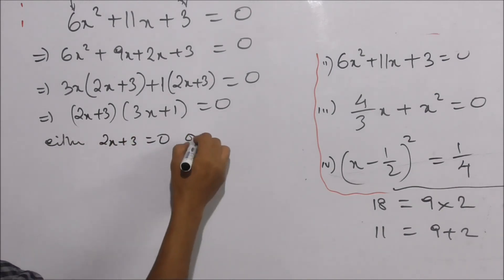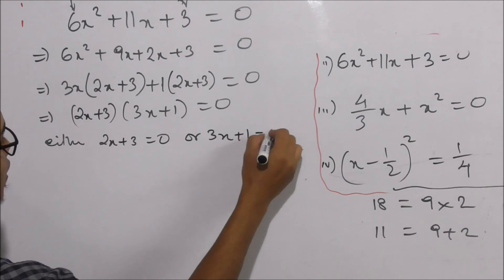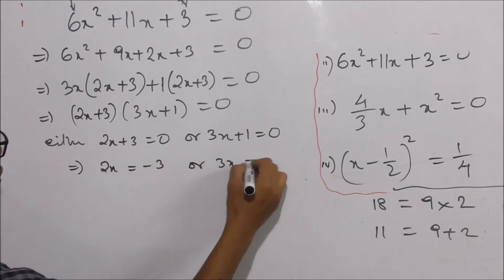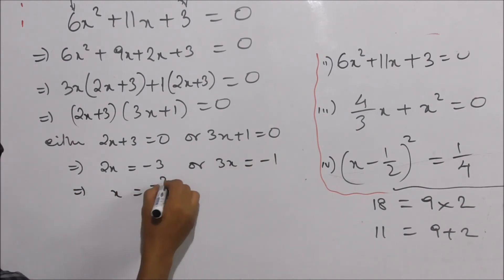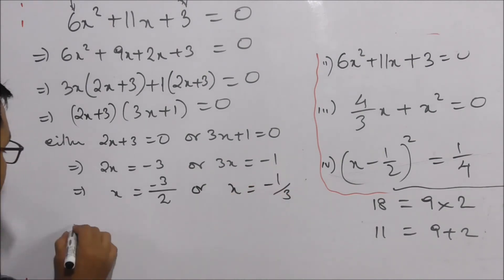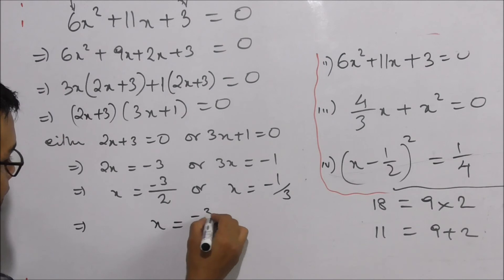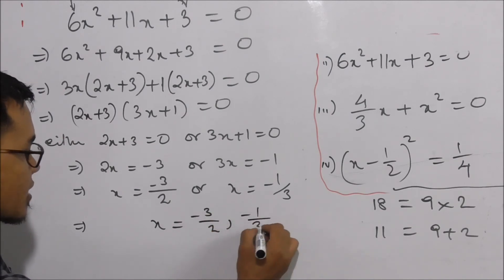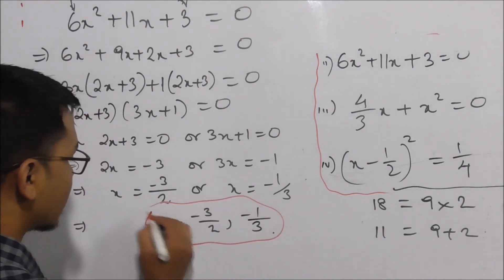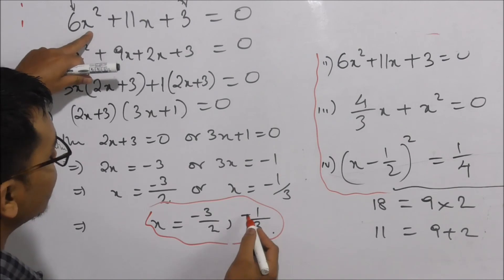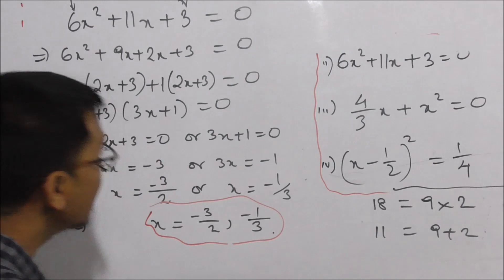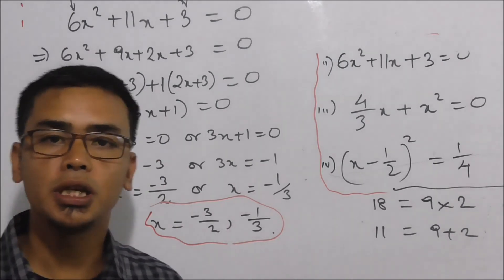Either 2x plus 3 is equal to 0 or 3x plus 1 is equal to 0. It implies 2x is equal to minus 3 or 3x is equal to minus 1. Therefore x is equal to minus 3 by 2 or x is equal to minus 1 by 3.